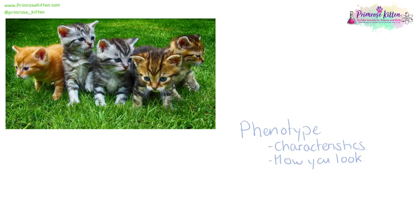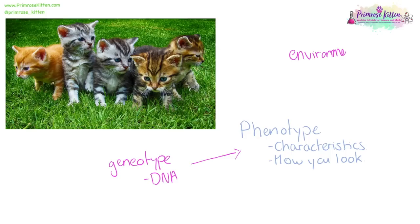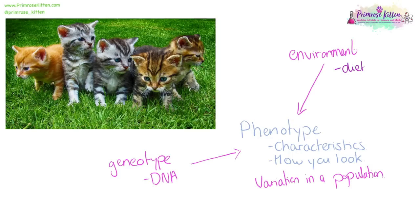Identical twins have the same genotype but their phenotypes — their characteristics and how they look — can be very different, because phenotype is influenced by both your genotype and your environment. This leads to natural variation in a population. Factors influencing variation include diet, exercise, and personal choice.